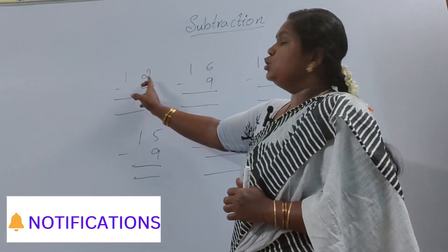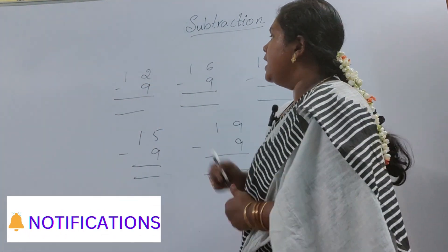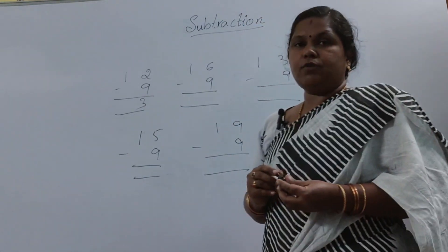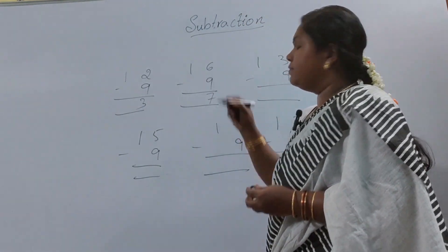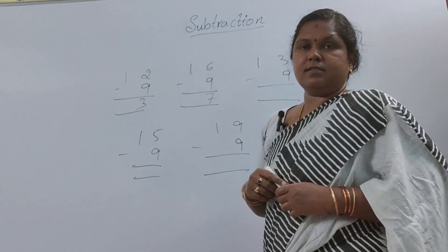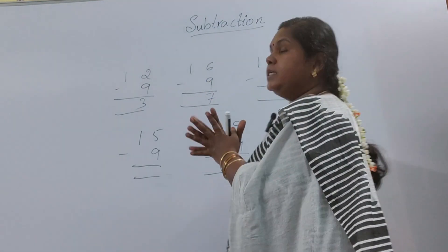See here I have written 12 minus 9. I will just put the number without seeing: 3. And here 16 minus 9 I will just write this. How did I write this without counting?